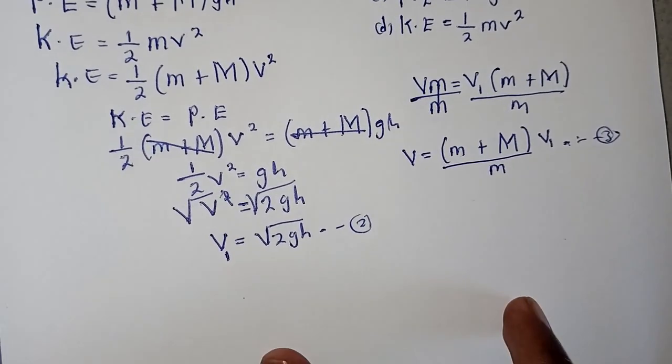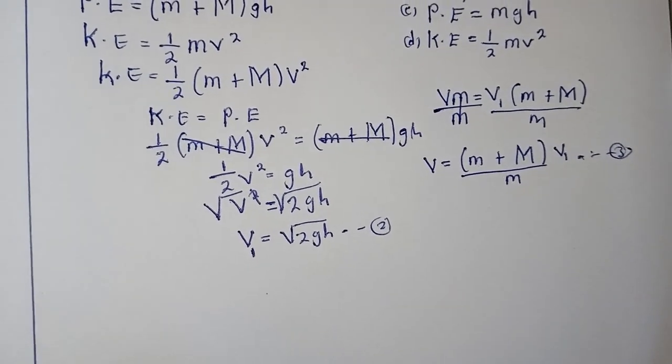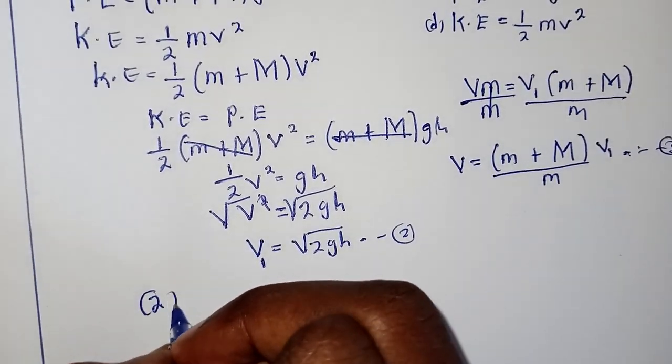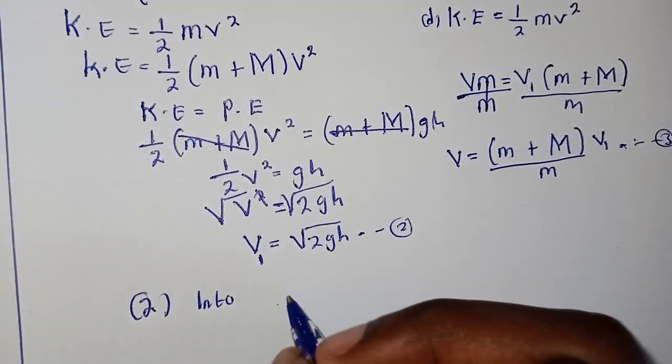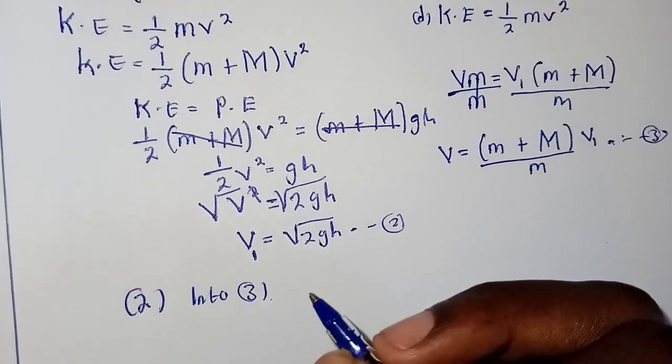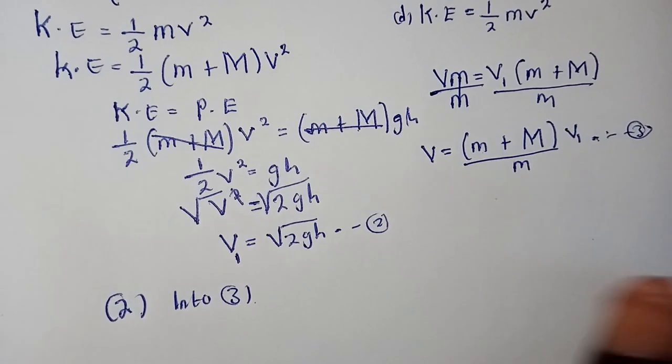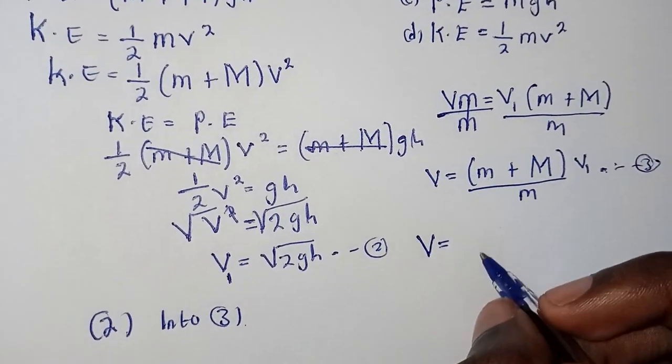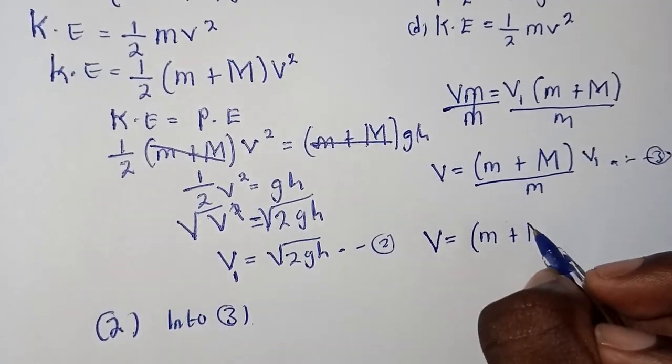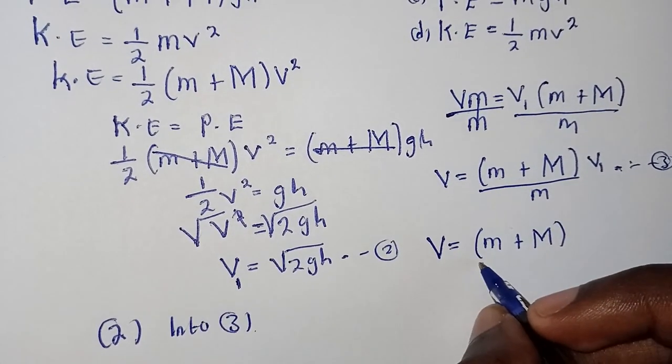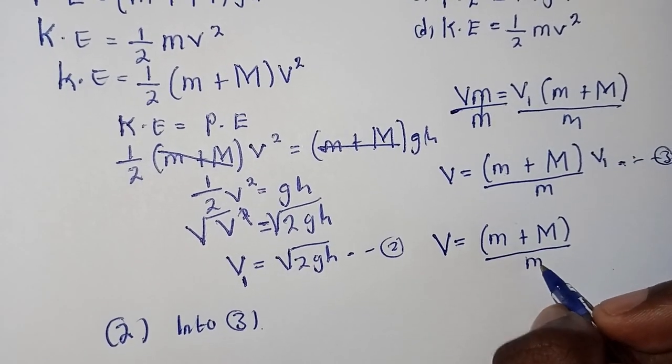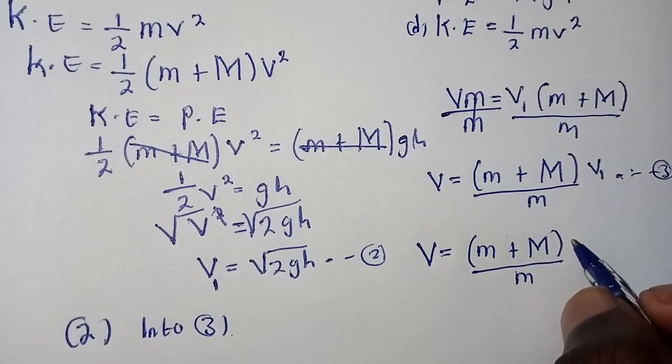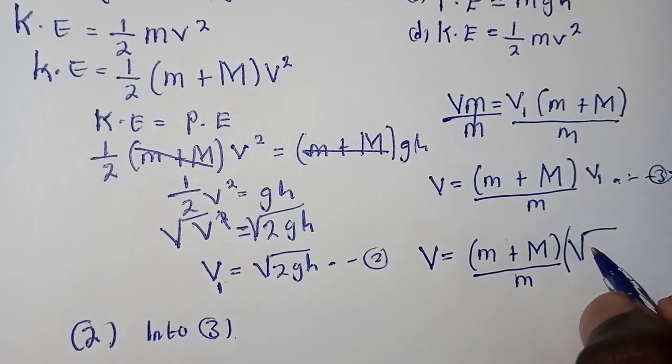Then we can show that equation 2 into 3, so this is going to be V is equal to m plus M over m. While there is V₁, we can replace with this expression, and finally we're going to have something like this.